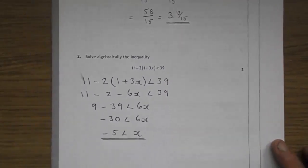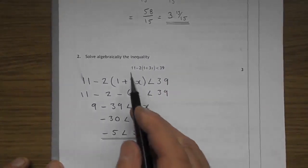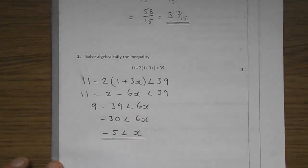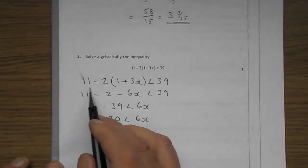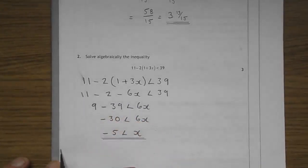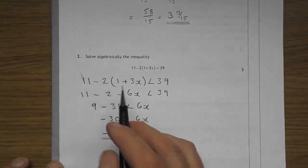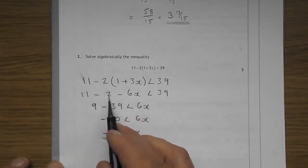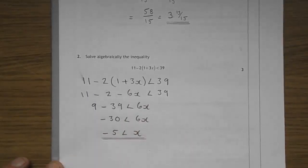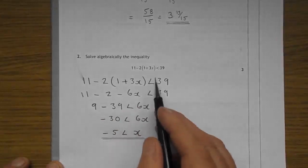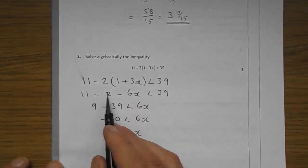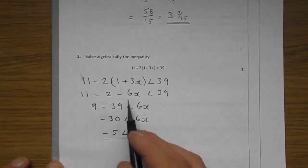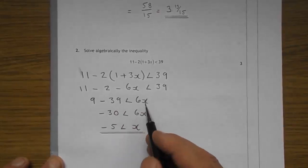Moving on to question two. Solve algebraically the inequality. So there you have it there. I've written it a little bit bigger here for you. Sorry for the smudge there. So let's just multiply through. Obviously you don't do eleven take two to give nine because BODMAS says you have to multiply this out first.